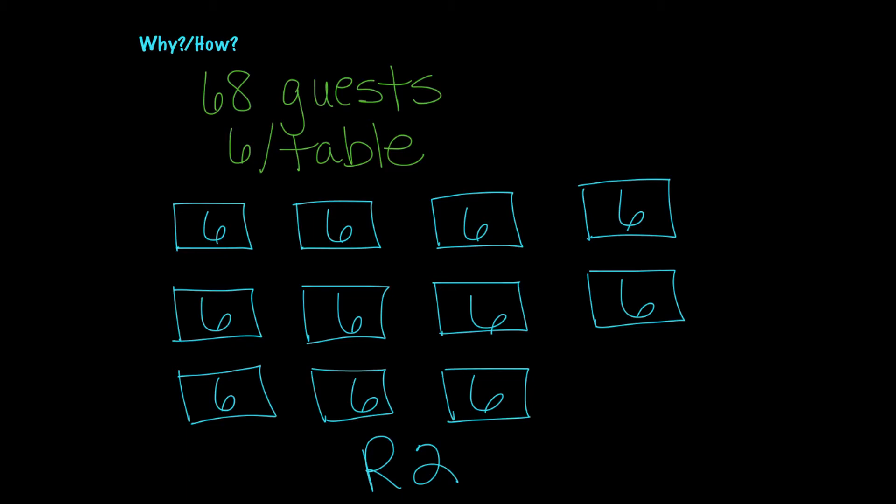So here's another example. Let's say that we have 68 guests coming to a wedding and only six people can sit at a table. So we have to figure out how many tables would be needed.